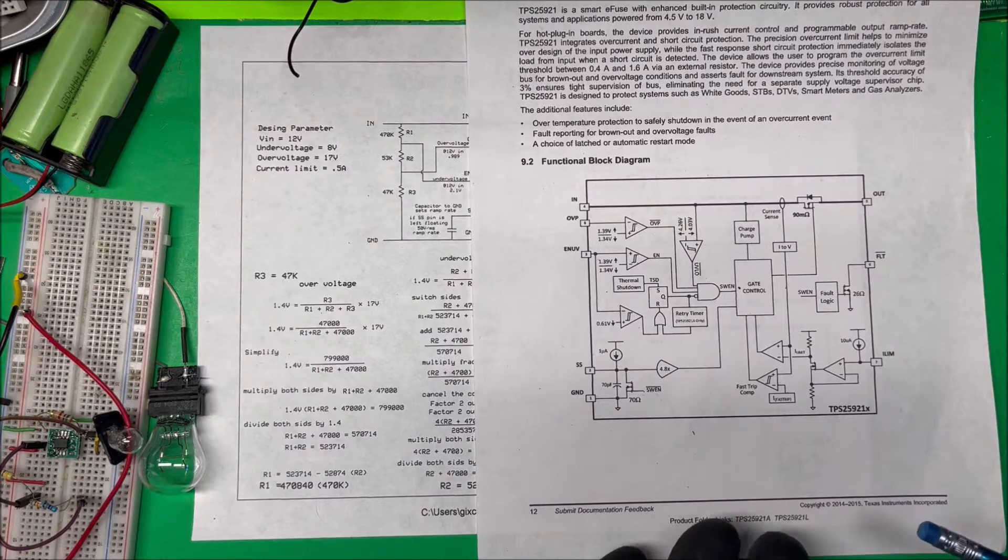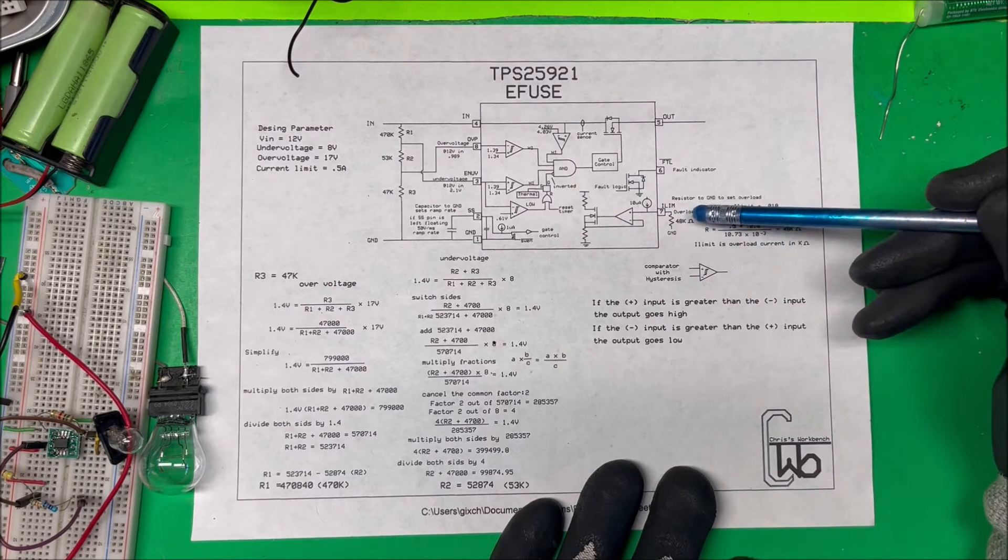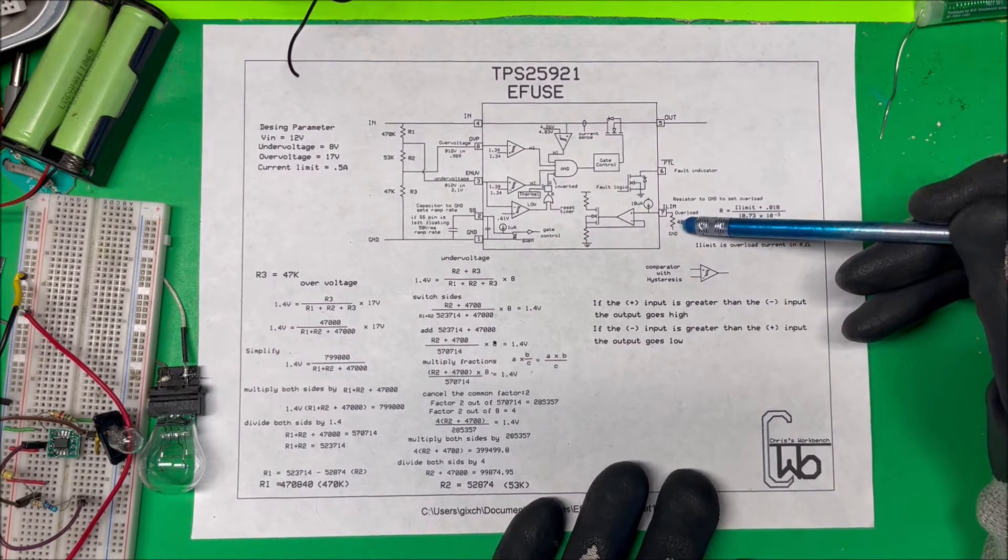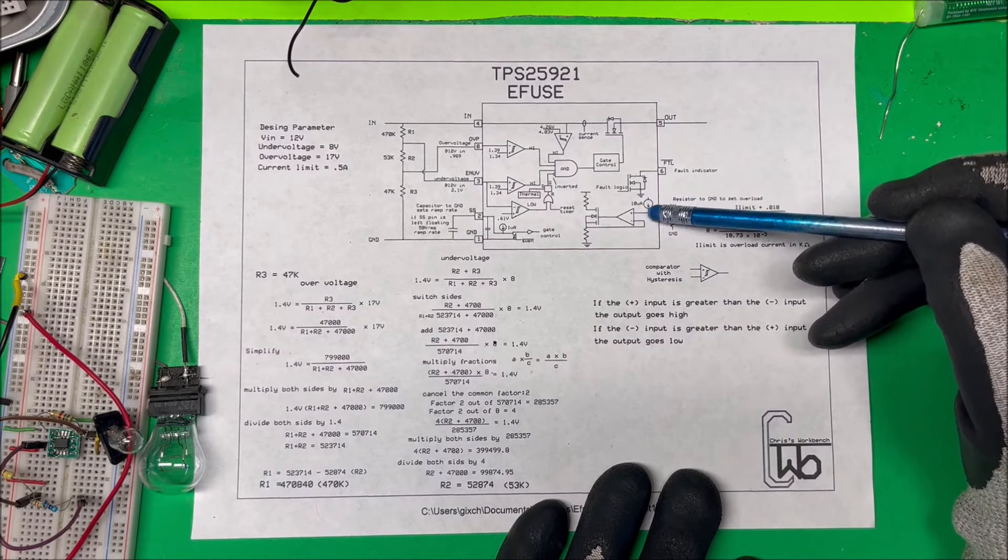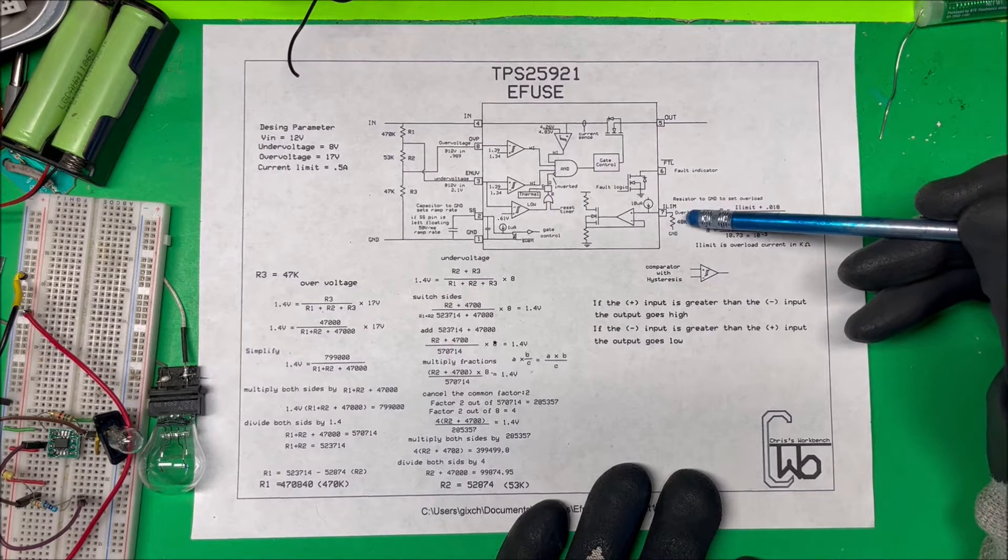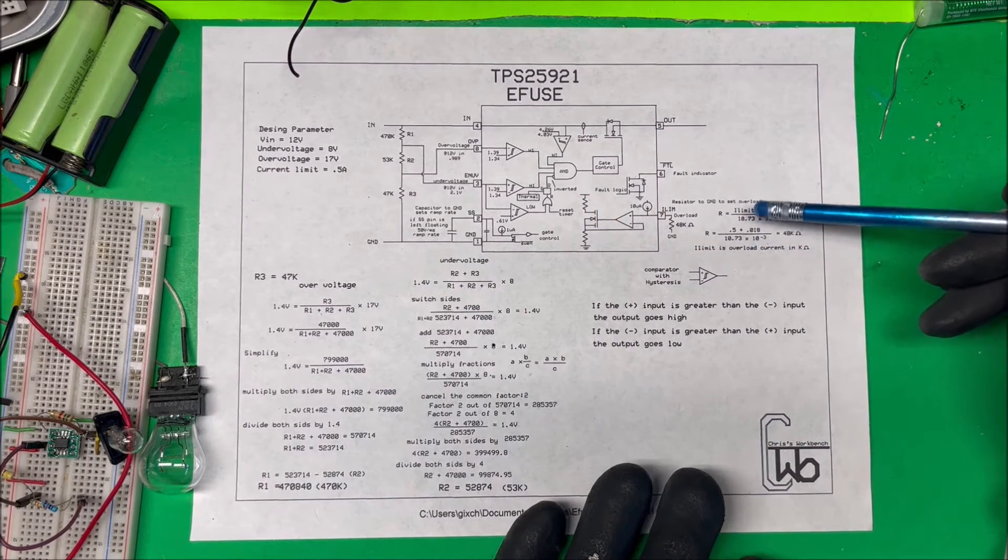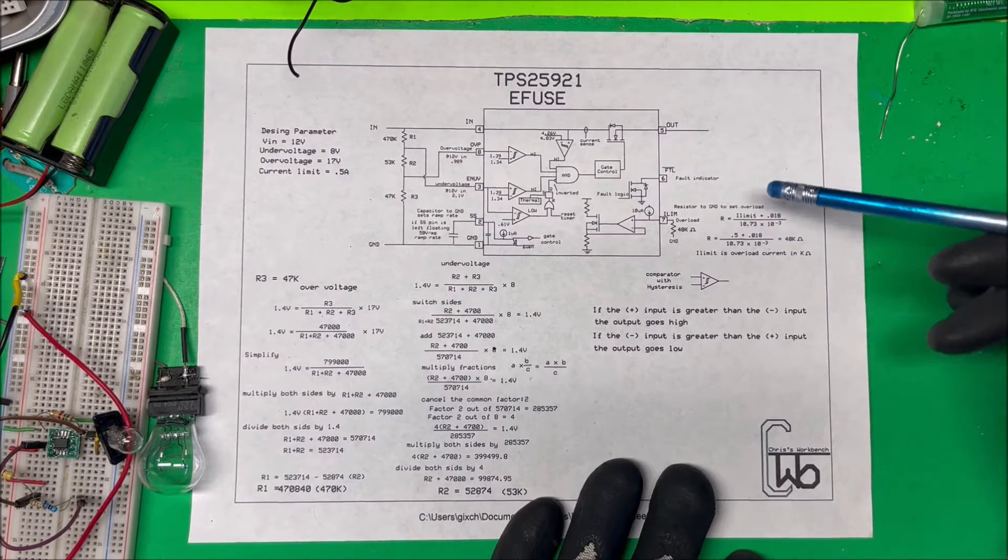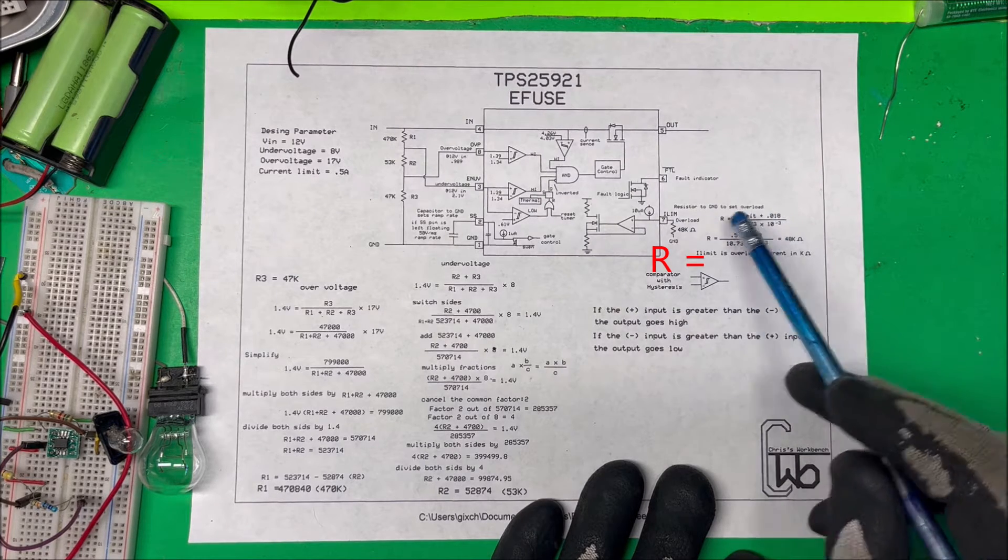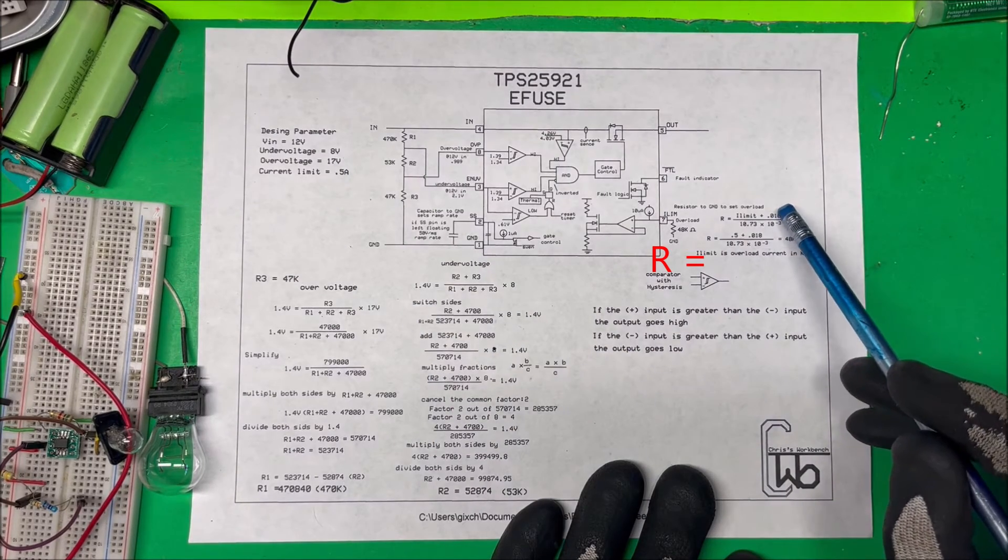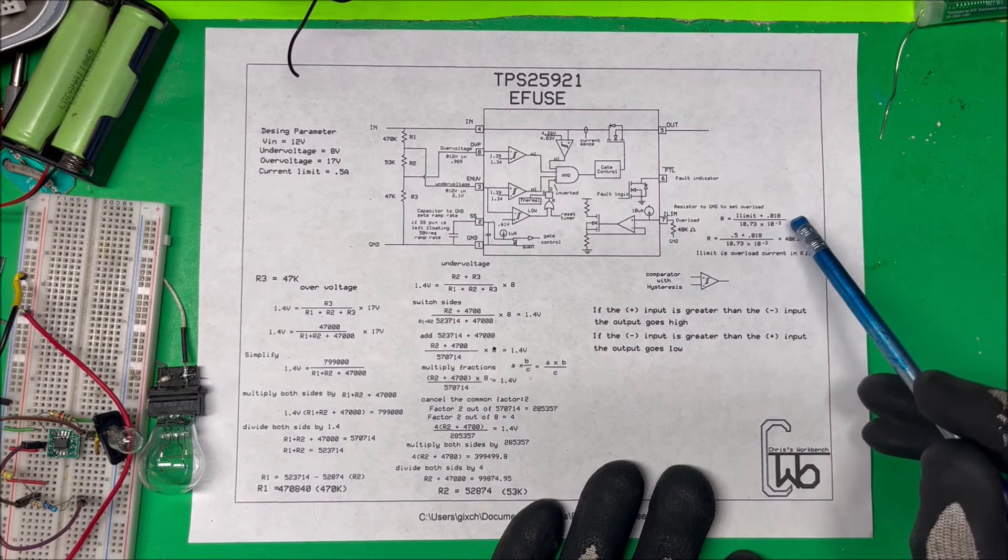For our current limit, this one has 10 microamps being injected. We're going to have a resistor from pin 7 to ground to calculate our current. To figure out the resistor, we take the resistance times I_limit, which is 0.5 amps, plus 0.018, and divide that by 10.73 × 10^-3.